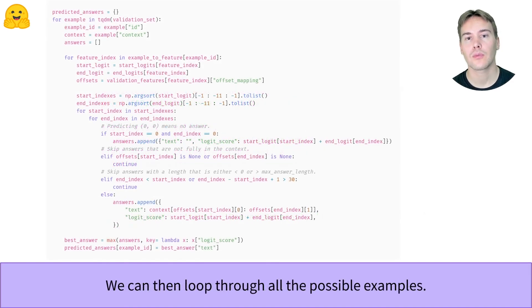Next, we just have to loop through every example, picking for each the answer with the best logits score in all the features the example generated. Now you know how to get answers from your model prediction.